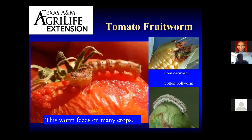The next worm is probably the most famous — the tomato fruit worm. One thing to know is that this fruit worm feeds on many crops. It's also known as the corn earworm when attacking corn, and the cotton bollworm when attacking cotton. If you have sweet corn next to your tomatoes, that's going to attract the tomato fruit worm to your garden, and it will feed on many of your crops, including beans and snap beans.